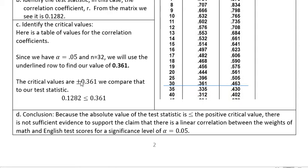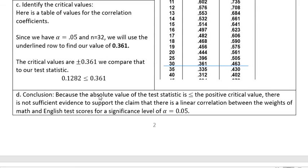And we always compare the absolute value of the test statistic and the positive value of our critical value. So 0.1282 is less than 0.361. Since the absolute value of our test statistic is less than or equal to the positive critical value...